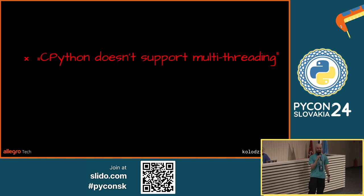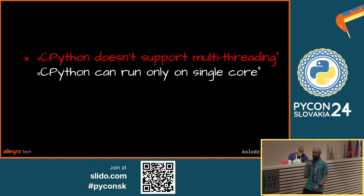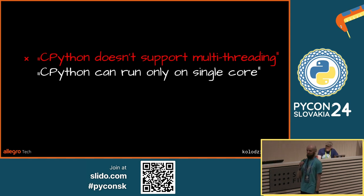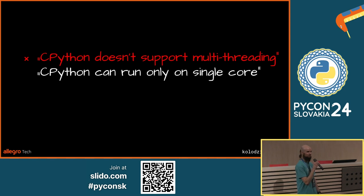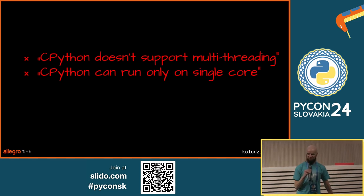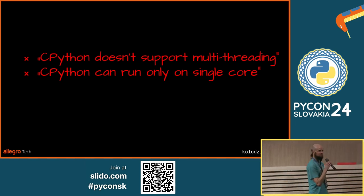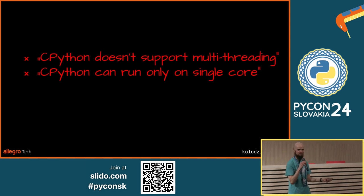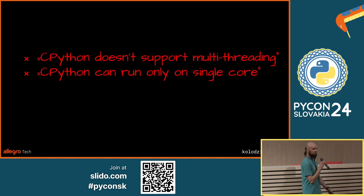So this is clearly wrong, and it has been wrong since 1992. There's also this statement — is it true or false? It is false. CPython can easily be run across multiple cores. Run your application with multiple threads and you will see that the process is using multiple cores indeed.